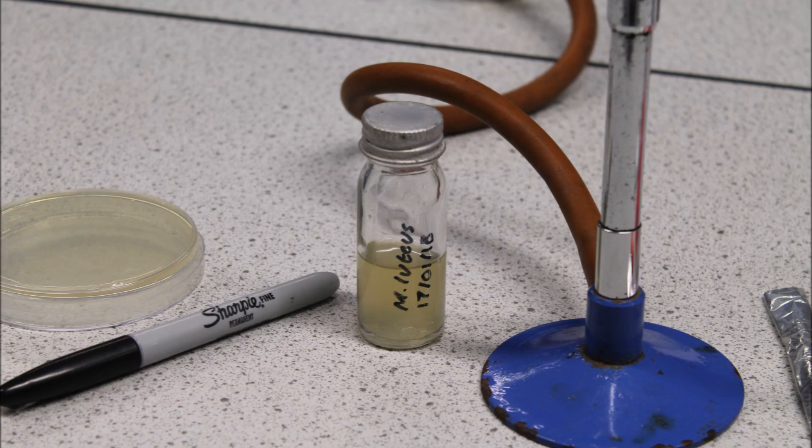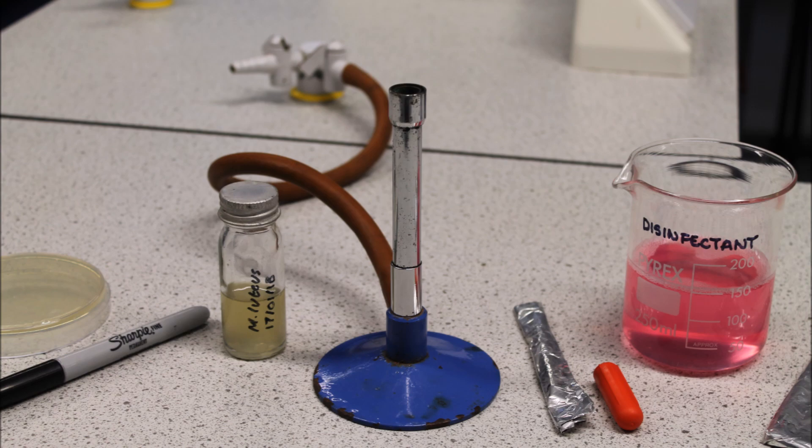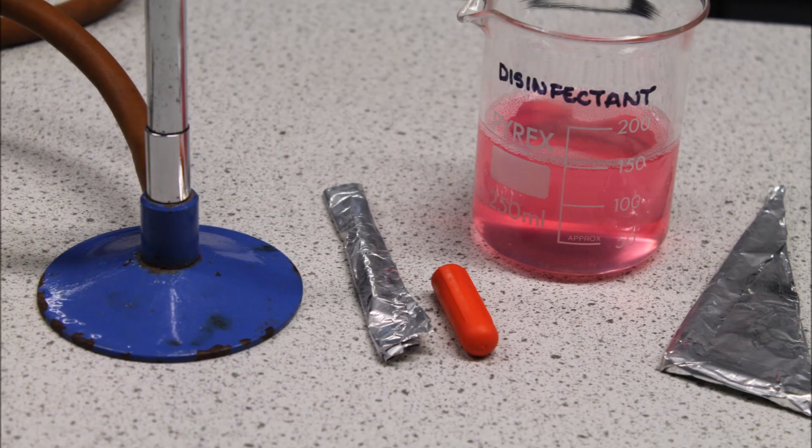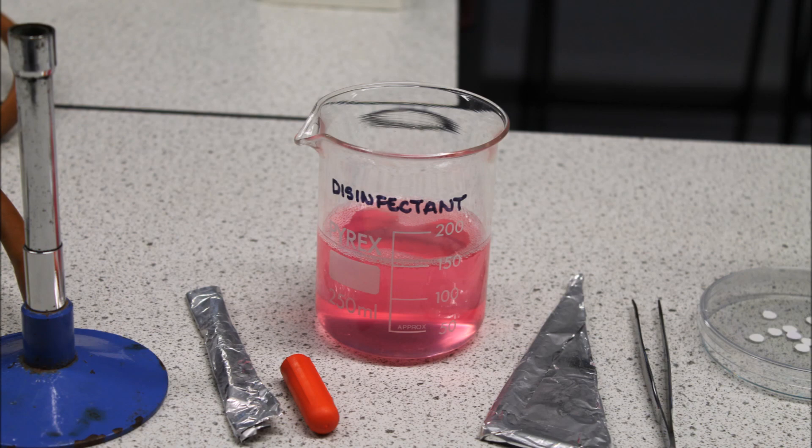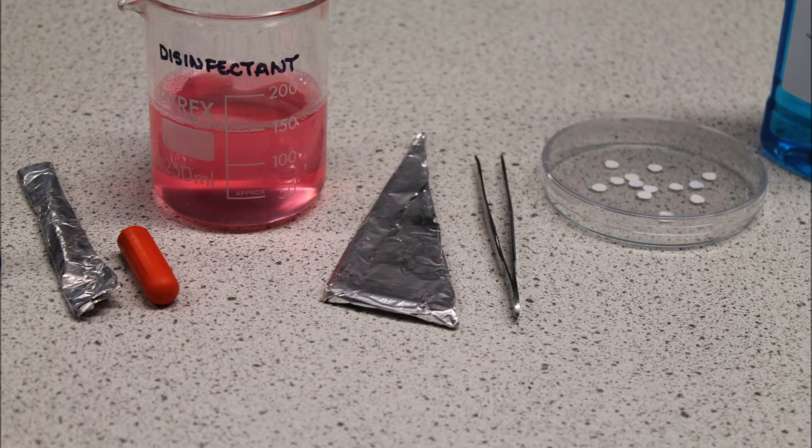A Bunsen burner, a sterile glass pipette and pipette teat. The pipette is wrapped in foil to keep it sterile, having previously been treated at high temperature. A beaker of disinfectant, a sterile glass spreader. Again it is wrapped in foil to keep it sterile, having previously been treated at high temperature.